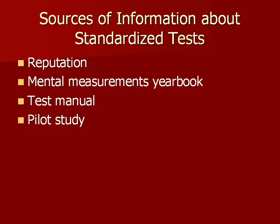College admissions officers who use standardized tests know a great deal about them from experience — they know how students have performed. If they admit a student with a total SAT of 1100, they can look at what grade point average that student earns in their junior year. Students with 1100 generally have a good grade point average, so they can continue using the test. Of course, some colleges and universities have been dropping standardized tests as admissions criteria, deciding there are other more important factors in the process.